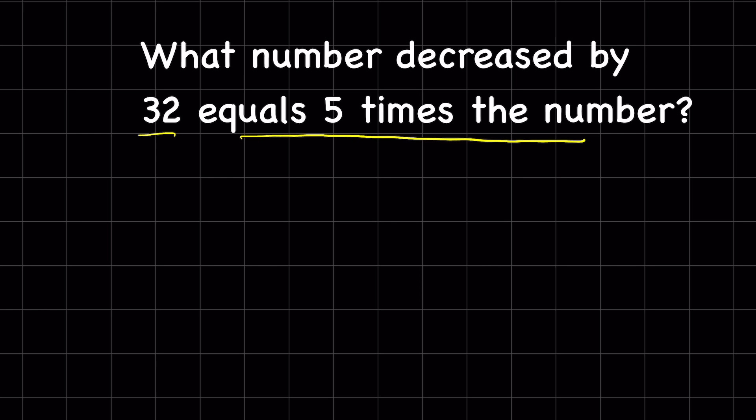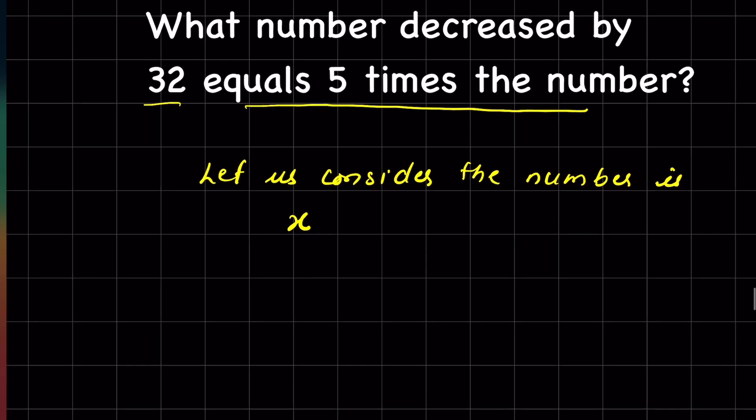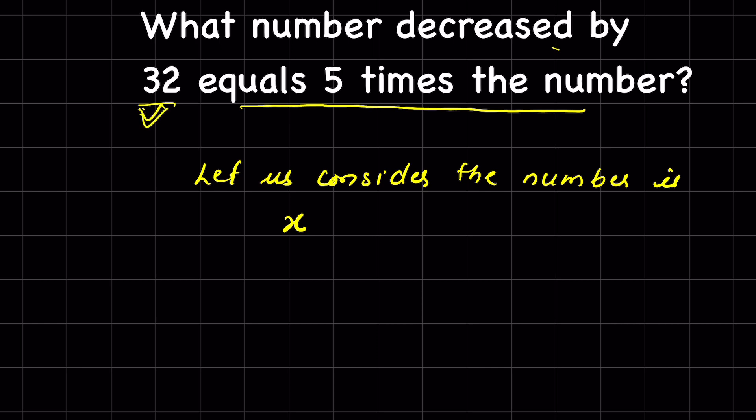Let us consider the number is x. The number is decreased by 32, so x minus 32 equals 5 times the number. So it equals 5 times x.